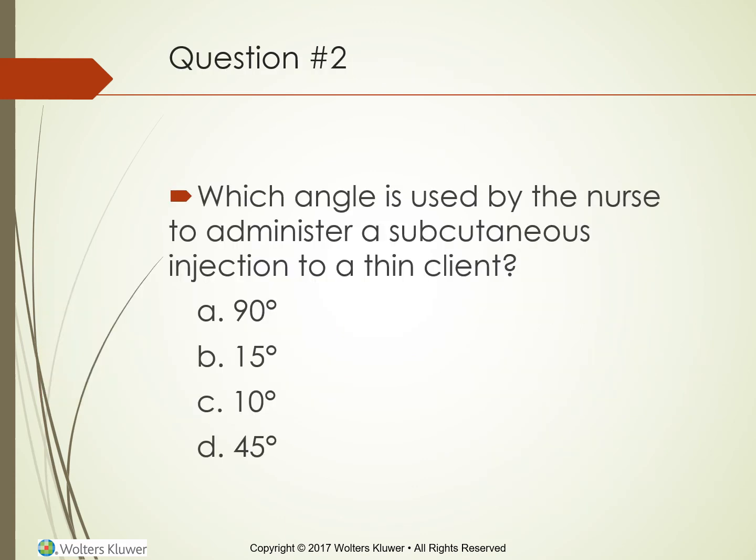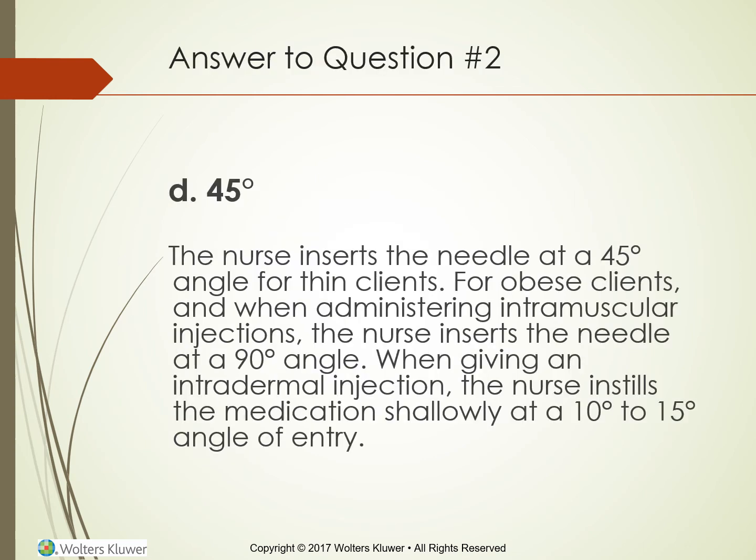Which angle does the nurse use to administer a subcutaneous injection to a thin client — 90 degrees, 15 degrees, 10 degrees, or 45 degrees? The answer is 45 degrees. For obese clients and intramuscular injections, the needle is inserted at 90 degrees. For intradermal injections, the nurse instills the medication shallowly at a 10 to 15 degree angle.